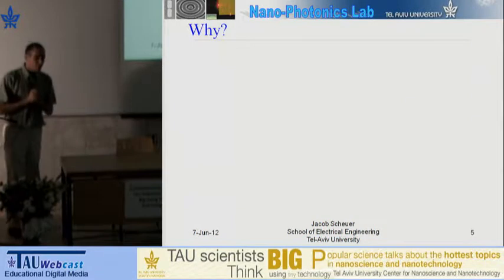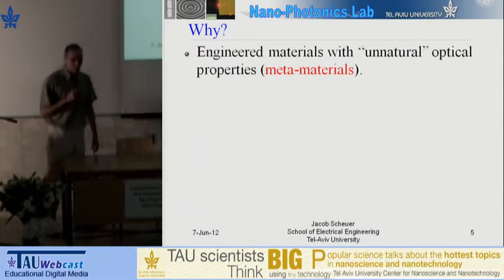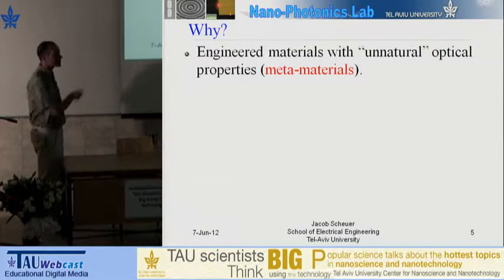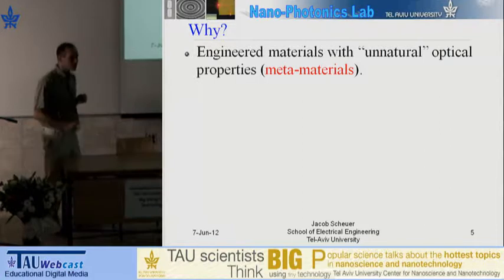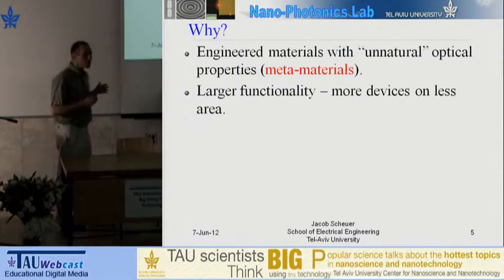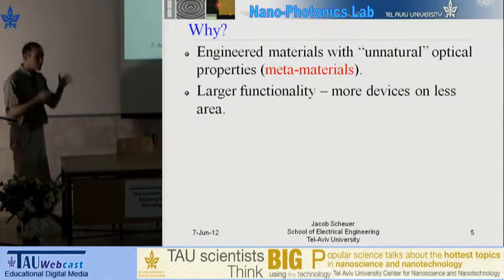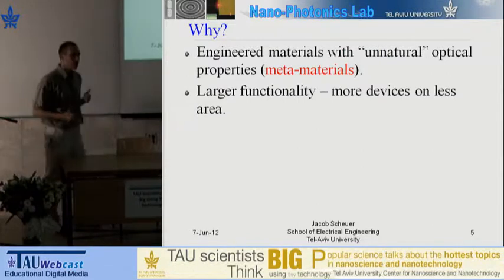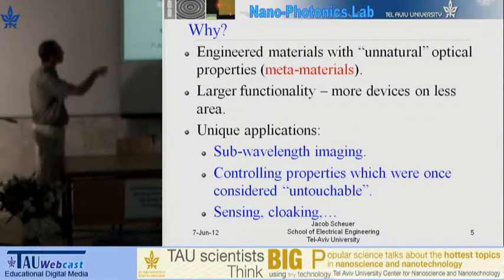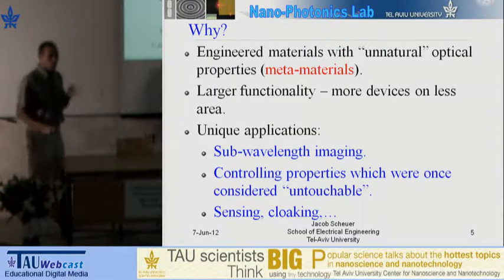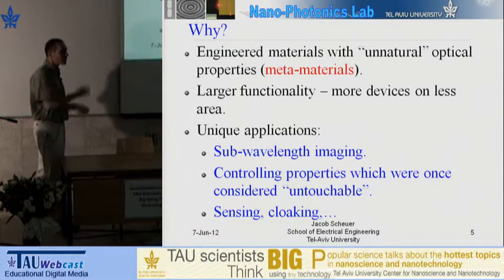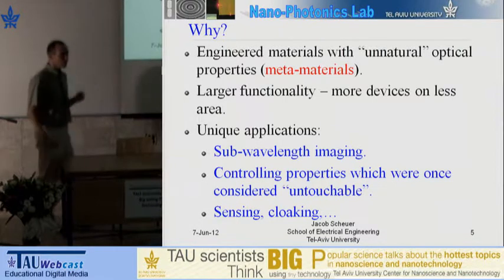Why are we interested in nanophotonics? There are many things we can do with it. One of the most promising ideas is the ability to engineer artificial or unnatural materials, known as metamaterials. These materials have properties which do not exist in nature. Having the ability to make extremely small devices allows us to squeeze a lot of functionality into small scales and make more complex optical processors. We can do imaging at resolutions far beyond optical microscopy, control properties of metals, make extremely sensitive sensors, disguise and cloak things, and much more.